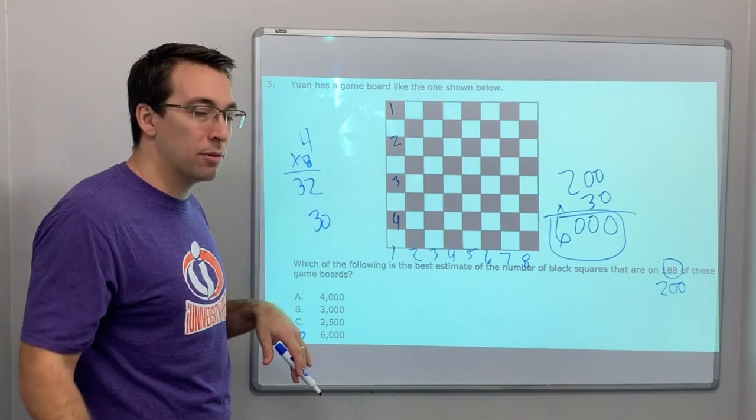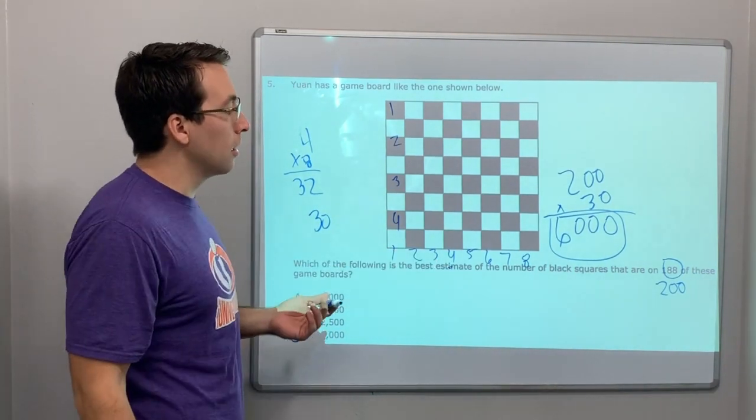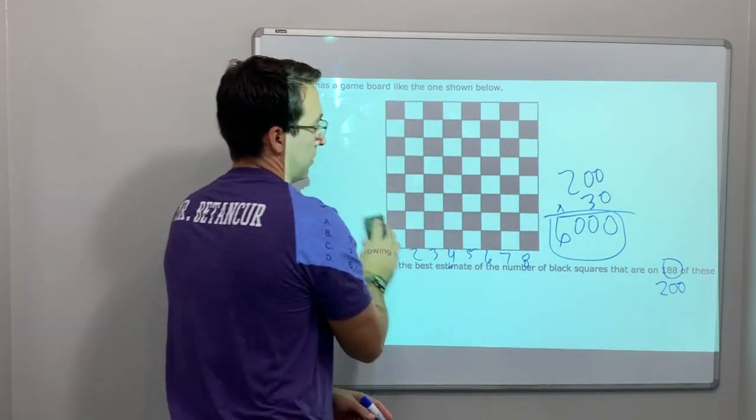Which is the best estimate? That's not our answer. Our answer would be like 32 times 188. That's the exact answer.